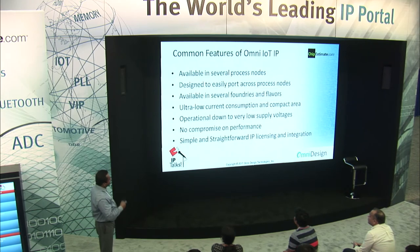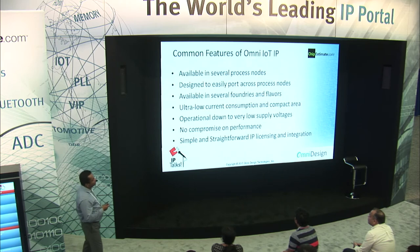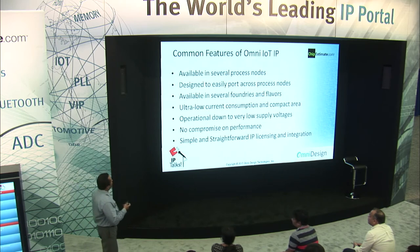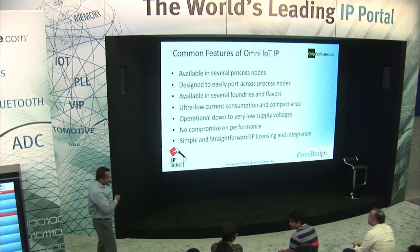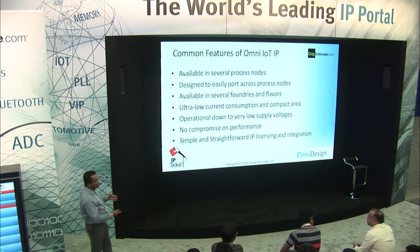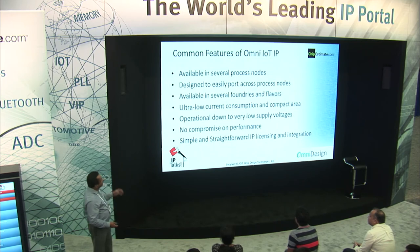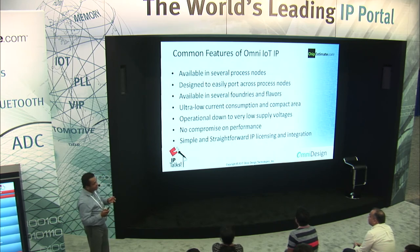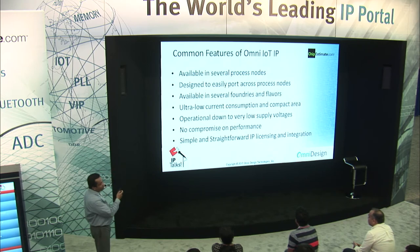Now I'm going to describe our IoT IP. When we thought about this offering, there are certain key things to keep in mind. First, it has to be available in various process nodes and be easily translatable, because IoT applications are diverse — unlike processors that always move to the next lowest node. You need IP that is easily scalable and portable from process flavor to process flavor. Ultra-low current power consumption and compact area go without saying.